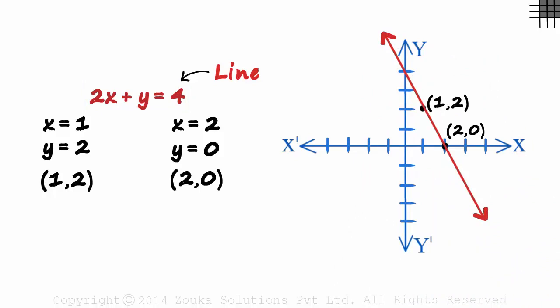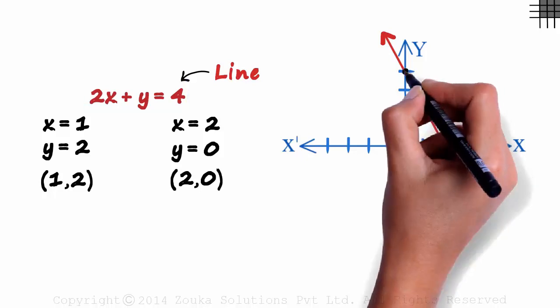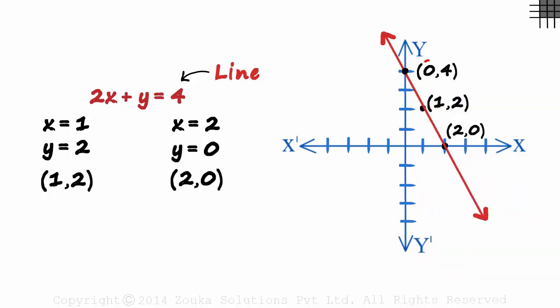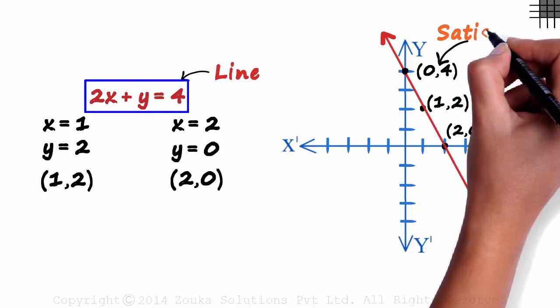Just to verify if this line is correctly drawn, take another point on the line and see if it satisfies this equation. Take this point for instance, 0 comma 4. If we substitute 0 in place of x and 4 in place of y, we do get a 4. It satisfies the equation.